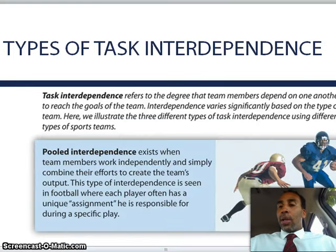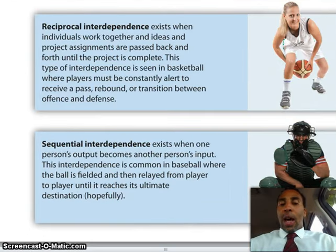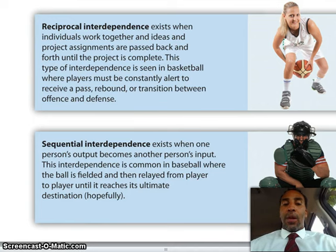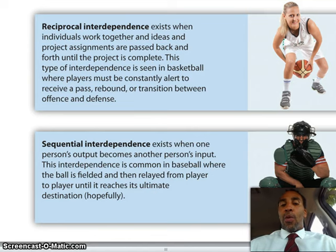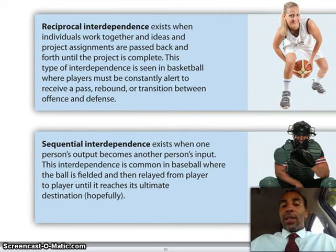Sequential interdependence exists when one person's output becomes another person's input. This is common in baseball, where the ball is fielded and then relayed from player to player until it reaches its ultimate destination.